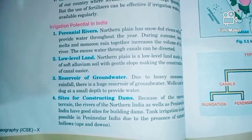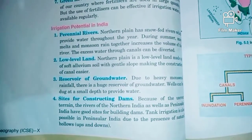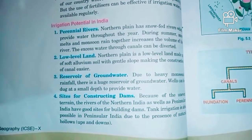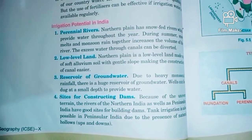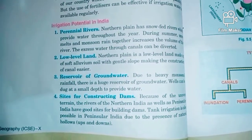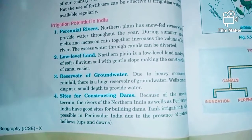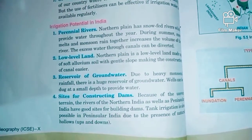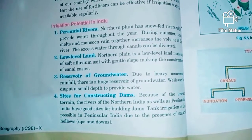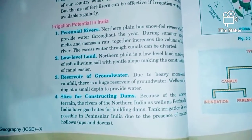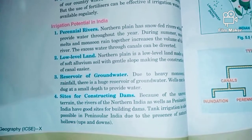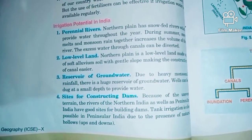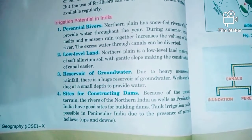The next factor is India's reservoir of groundwater. Where there is heavy rainfall, there is a possibility of large water seepage underground, creating huge underground water reservoirs. In such areas we can build wells and tube wells at a small depth, so water can easily be accessed and used for irrigation during dry periods.